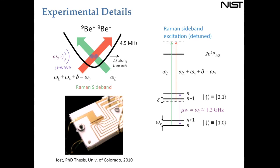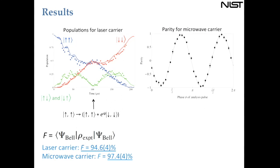In this arrangement, the ions are coupled and we have two modes: a center-of-mass mode and a stretch mode. In this particular experiment we're looking at the stretch mode at 4.5 megahertz. To complete the experiment, we Doppler-cool the ions, then cool them to the ground state using sideband transitions. We then apply the combination of carrier and sideband simultaneously for some duration, after which we measure the population.